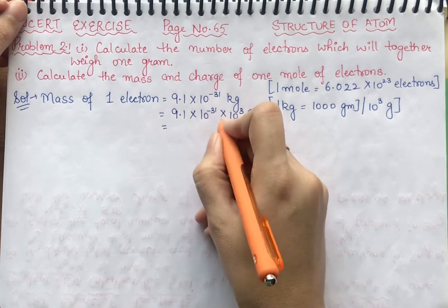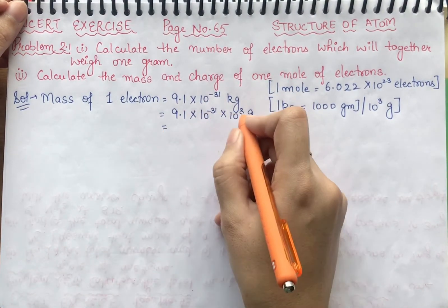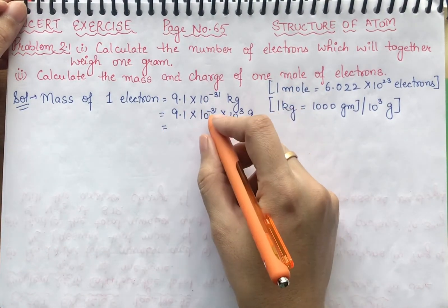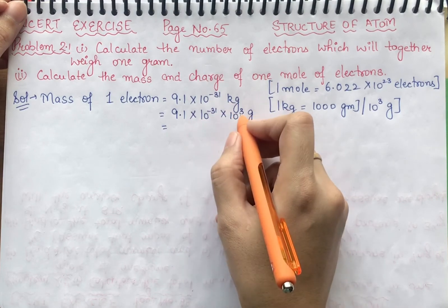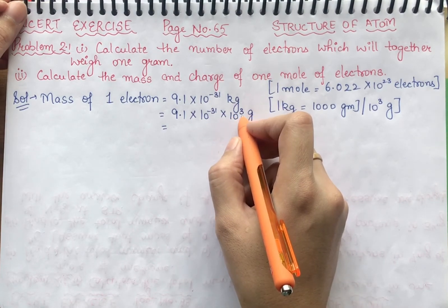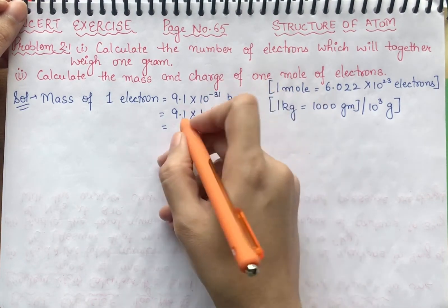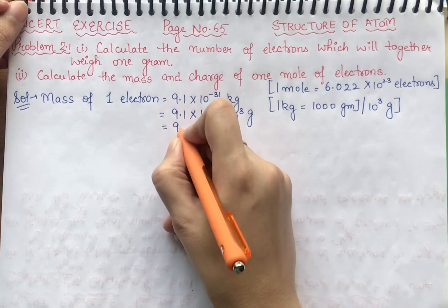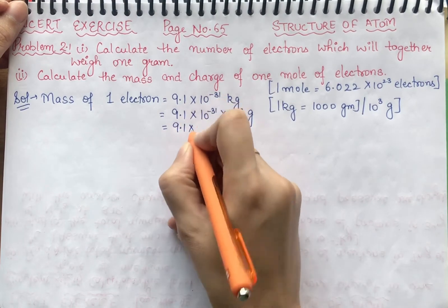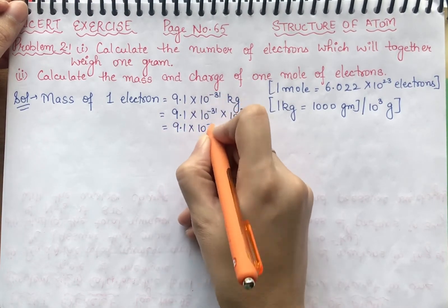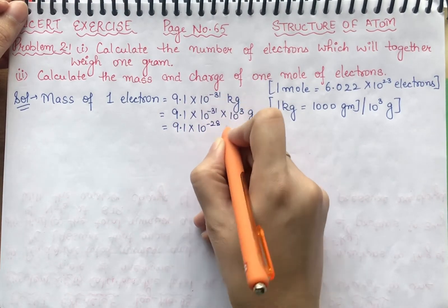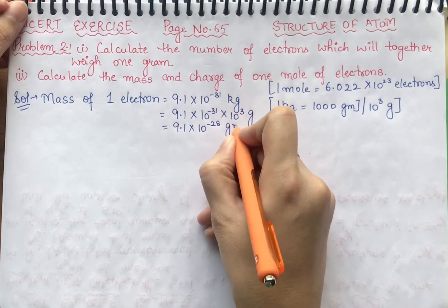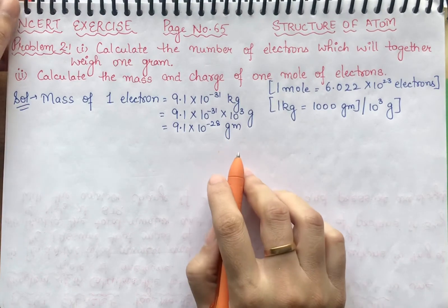When we solve the conversion, minus 31 plus 3 gives us 9.1 into 10 raised to power minus 28 grams. So the mass of 1 electron is 9.1 into 10 raised to power minus 28 grams.